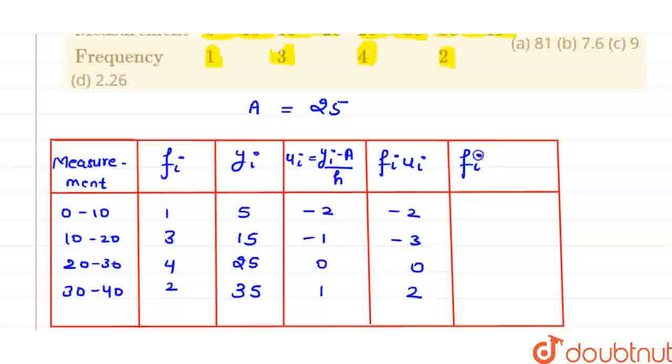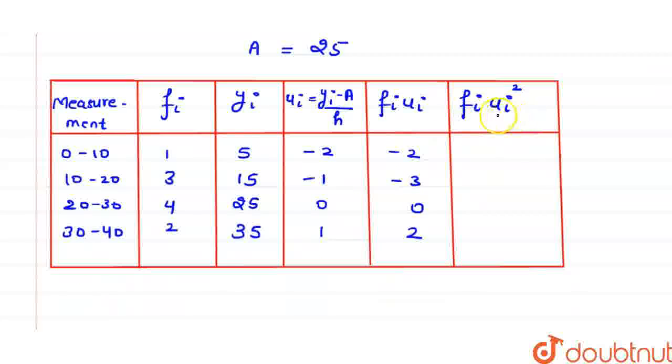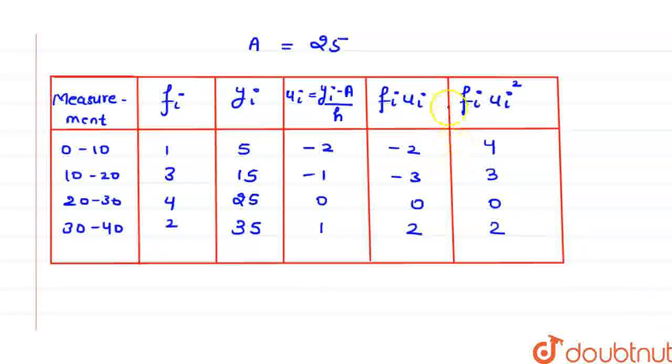Now let us calculate fi ui square. ui square will be: 2 square will be 4, 4 into 1 is 4. And minus 1 square will be 1, 1 into 3 will be 3. Here 0 square will be 0, 0 into 4 will be 0. 1 square will be 1, 1 into 2 will be 2. Now let us calculate summation fi ui. This will be minus 2 minus 3 will be minus 5, minus 5 plus 2 will be minus 3. And here this is 4 plus 3 is 7, 7 plus 2 is 9.